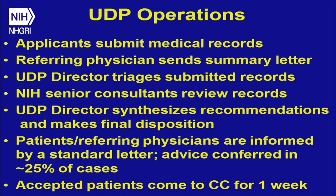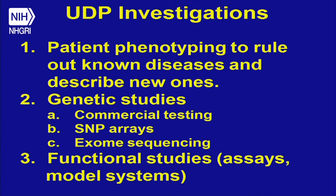We accept about 50 percent of the kids and only about 20 percent of the adults — you can sort of figure out why, in terms of the balance of subjective complaints versus objective findings. We see patients for one week as inpatients at the Clinical Center, and it doesn't cost them anything — we even pay for their travel. Then we do incredible phenotyping, genetic studies, SNPs to inform our exome analysis, and functional studies where we can.